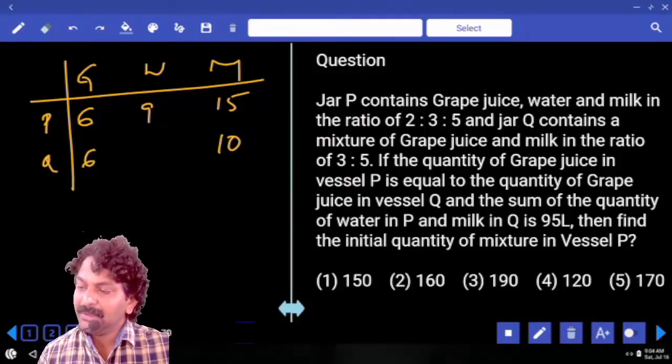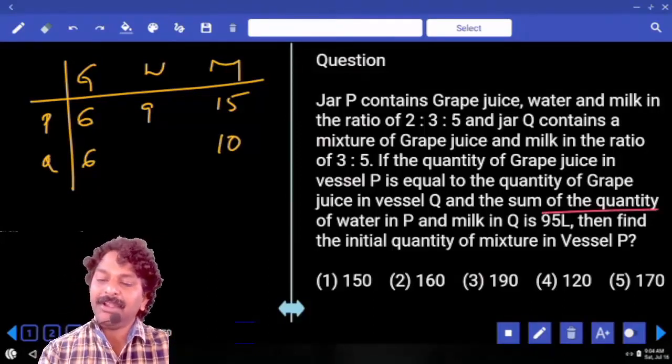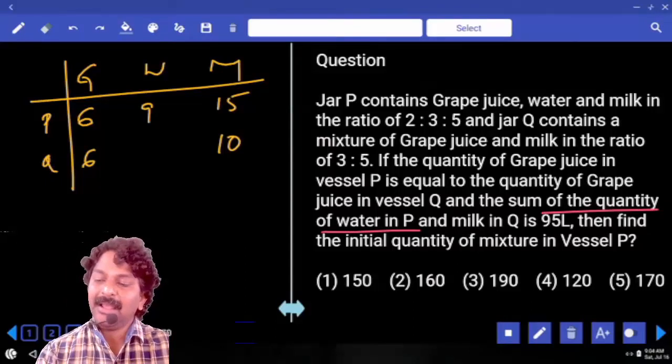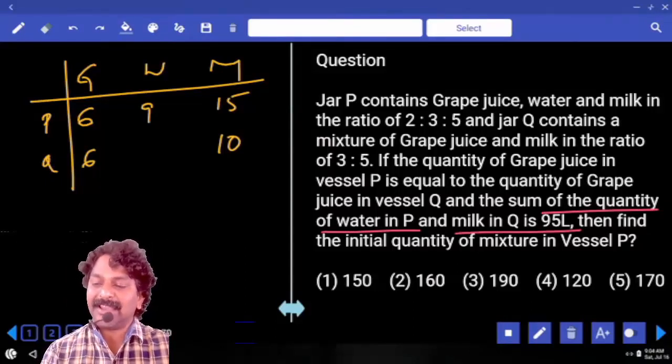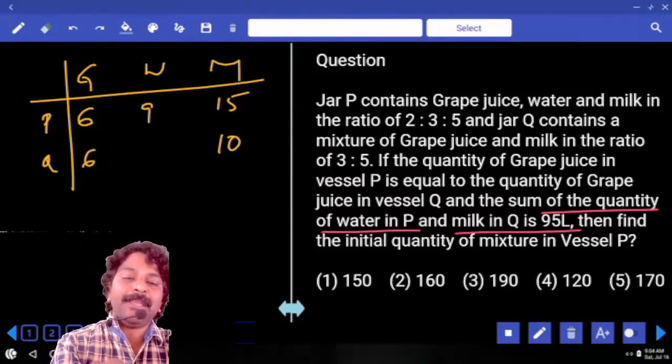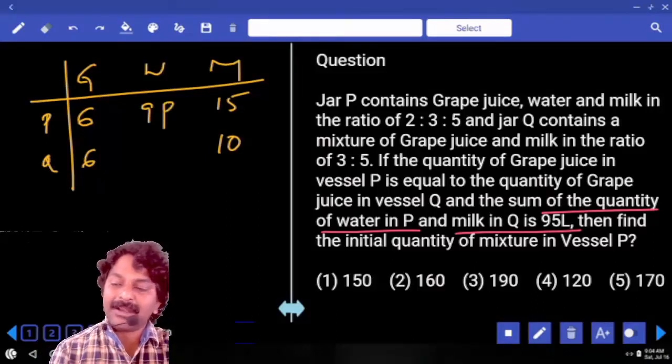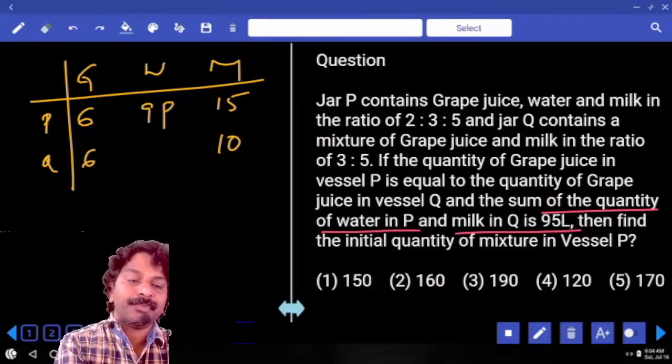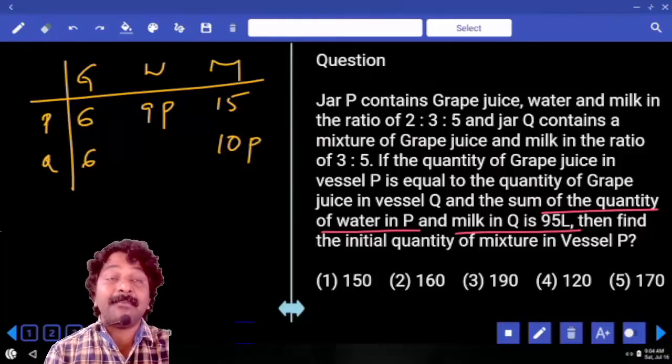Now, the sum of quantity of water in P and milk in Q is 95. Water in P, 9 parts. Milk in Q, 10 parts. Sum?